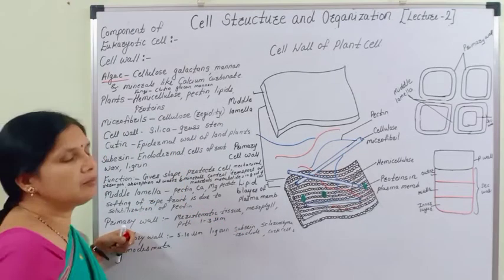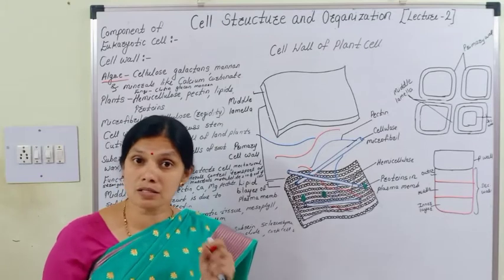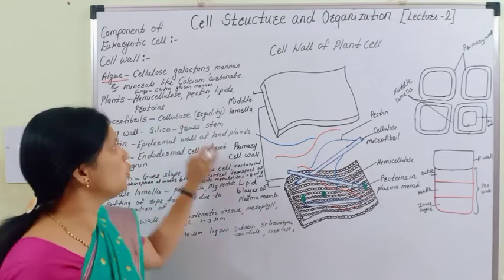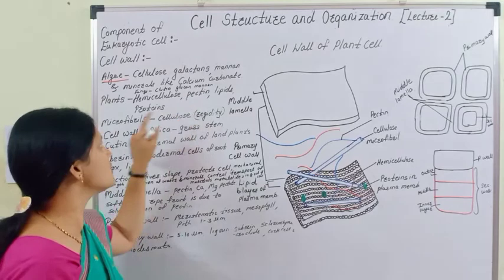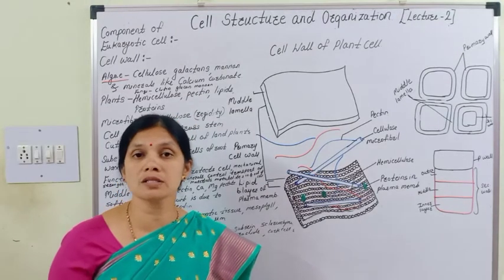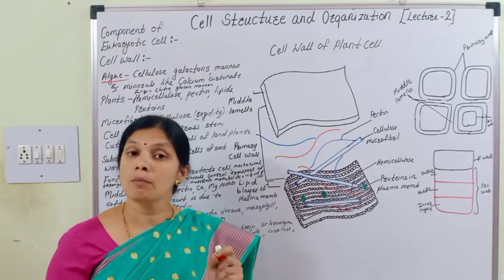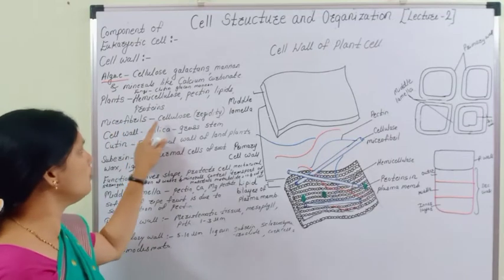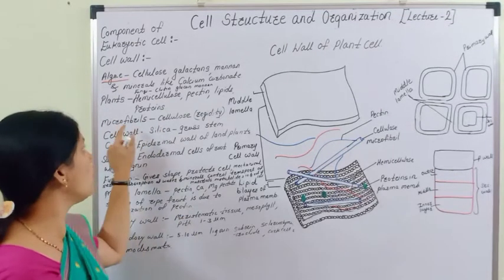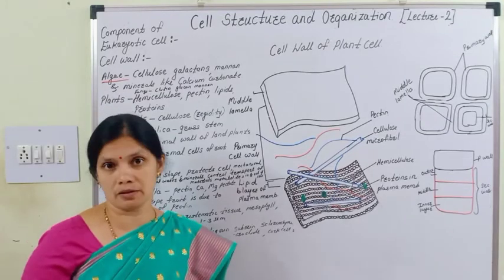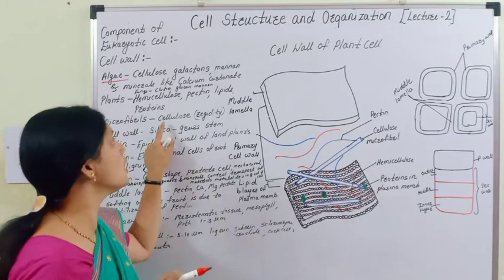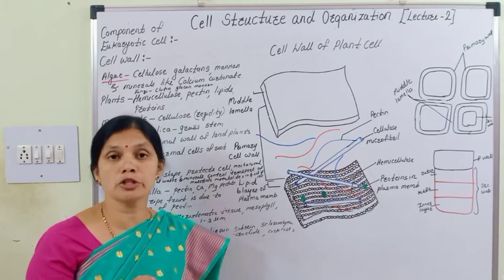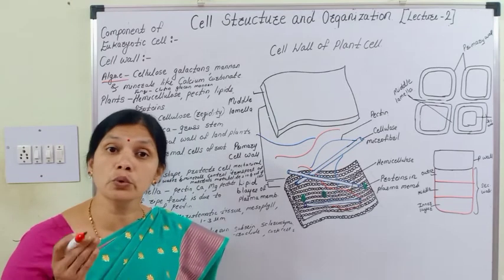In plants, the plant cell wall is formed from cellulose, hemicellulose, and pectin, as well as lipids and proteins which are also present in the cell wall of the plant cell. Along with these components, in the plant cell wall, microfibrils are also present.